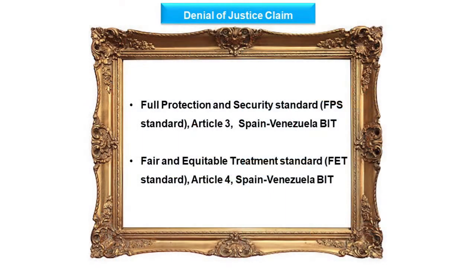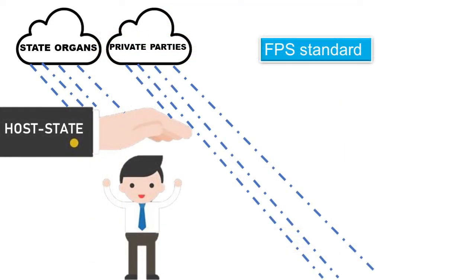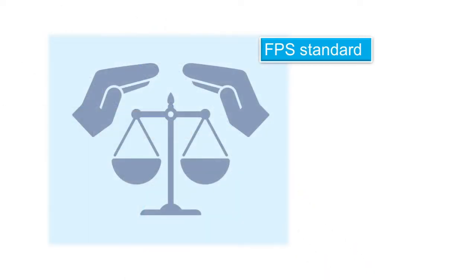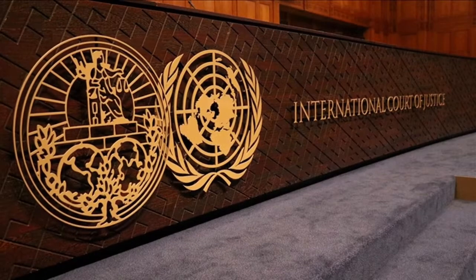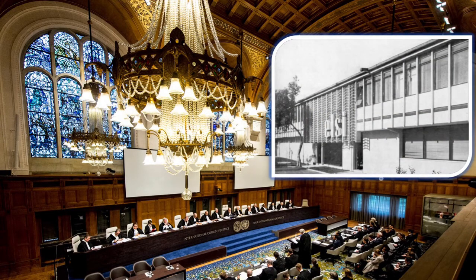In the case at hand, the denial-of-justice claim can be framed under the Full Protection and Security Standard, or FPS Standard, per Article 3 of the Spain-Venezuela BIT, as well as under the Fair and Equitable Treatment Standard, or FET Standard, pursuant to Article 4 of the applicable BIT. Under the FPS Standard, the host state is under an obligation to proactively protect foreign investments from adverse effects, which may come from private parties or its own state organs. Such adverse events stemmed both from private parties — the two car dealerships compelling GM to deliver 9,000 vehicles on no legitimate grounds — and from state organs — the state courts seizing GM's assets on account of GM's inability to deliver the vehicles. The International Court of Justice in the ELSI case established that the Full Protection and Security Standard is not restricted to physical protection, but extends to legal protection through the host state's domestic courts.